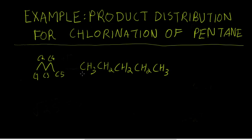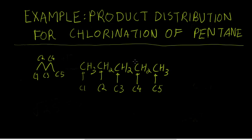In this representation, C1, C2, C3, C4, and C5 are identified. Remember, any of these hydrogens can be extracted to give you a pentyl radical, which in turn will react with diatomic chlorine to furnish the chloropentane. So what are the different products we can get?